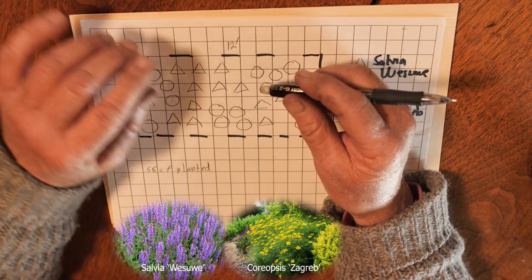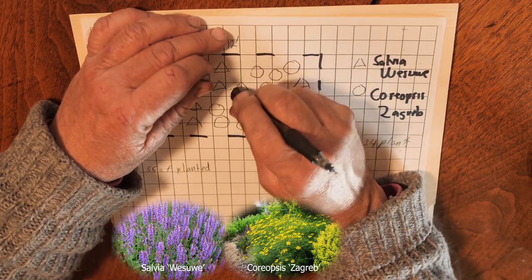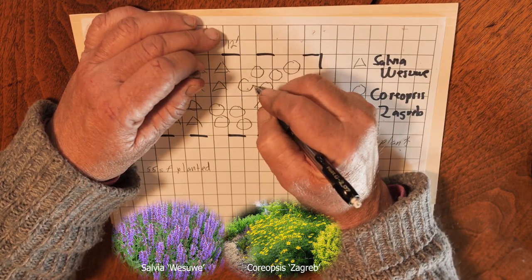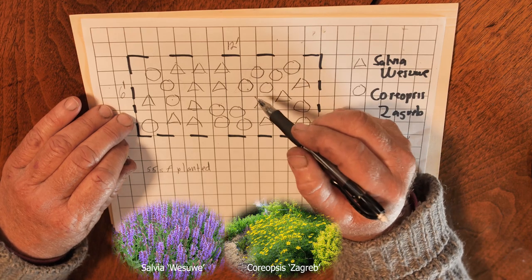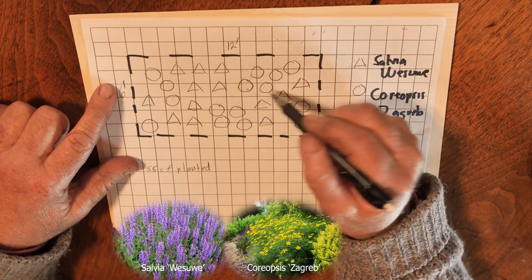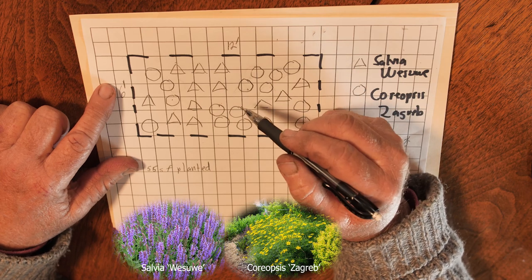I think because the Salvia has a faster growth rate, I'm going to take out that one Salvia and I'm going to add another Coreopsis zagreb here. That way the Coreopsis won't get out-competed within three to four years and should develop a better relationship with the Salvia wiesui.